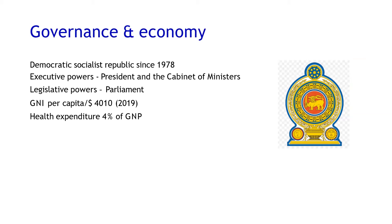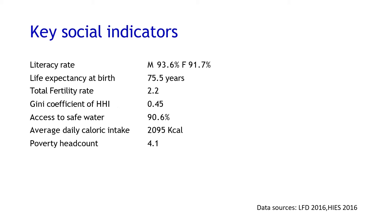Sri Lanka is a democratic socialist republic since 1978. We have a GNI per capita of US dollars 4,010, and Sri Lanka is a lower middle-income country. We spend only 4% of GNP on health expenditure. Although a small and developing country, our literacy rates are high both among females and males, which enabled us to develop a self-administered questionnaire in a validated self-administering manner. Our life expectancy at birth is 75.5 years. The Gini coefficient is almost similar to Mexico, as Mireya elaborated, and the poverty headcount is 4.1.